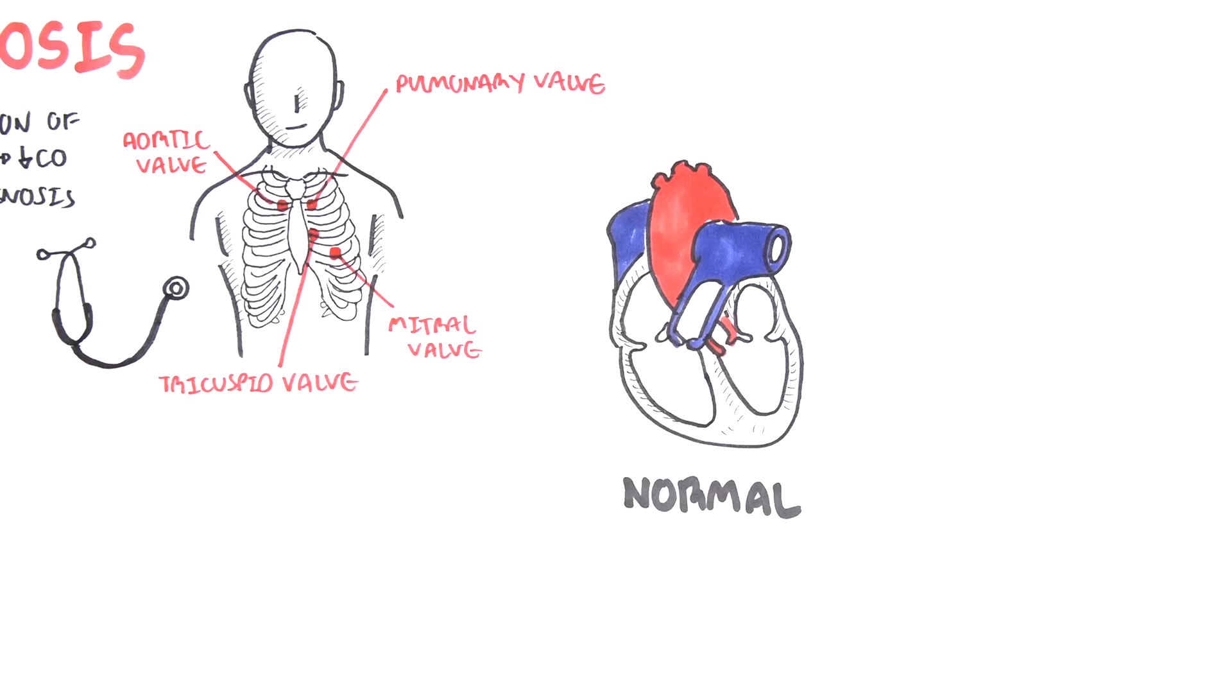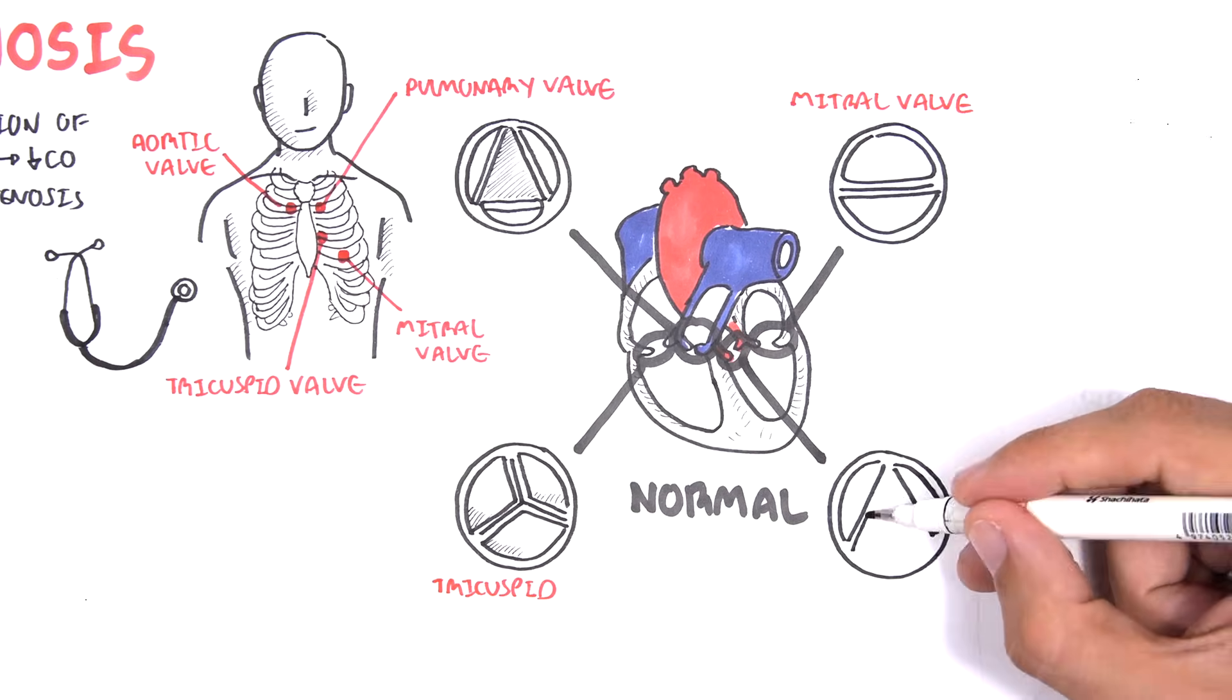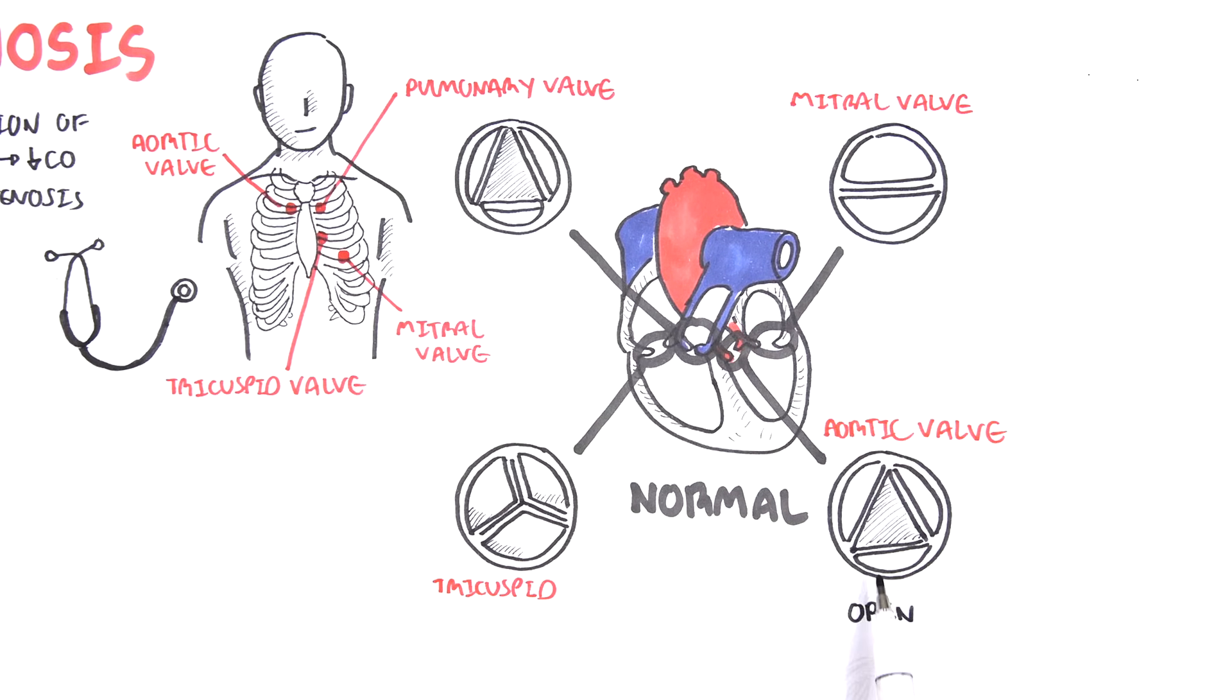The pulmonary valve is made up of three leaflets. The mitral valve, two leaflets. The tricuspid valve, three leaflets. And the aortic valve, three leaflets as well. Out of all the heart valves, the mitral is normally the only valve with two leaflets, and that is why it is also called bicuspid.